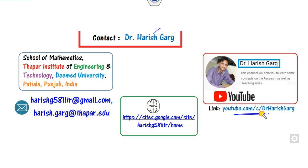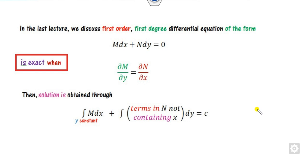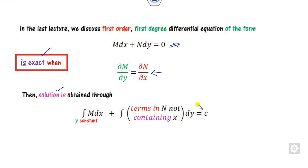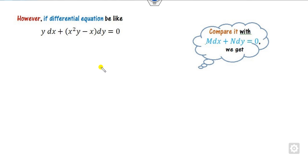You can simply follow this link for finding the various videos. In the last lecture, we have seen that any first order or first degree differential equation of the form M dx plus N dy is exact when a certain condition is satisfied. And when this condition is satisfied, you can easily find the solution through this equation. But sometimes the equation is not exact.